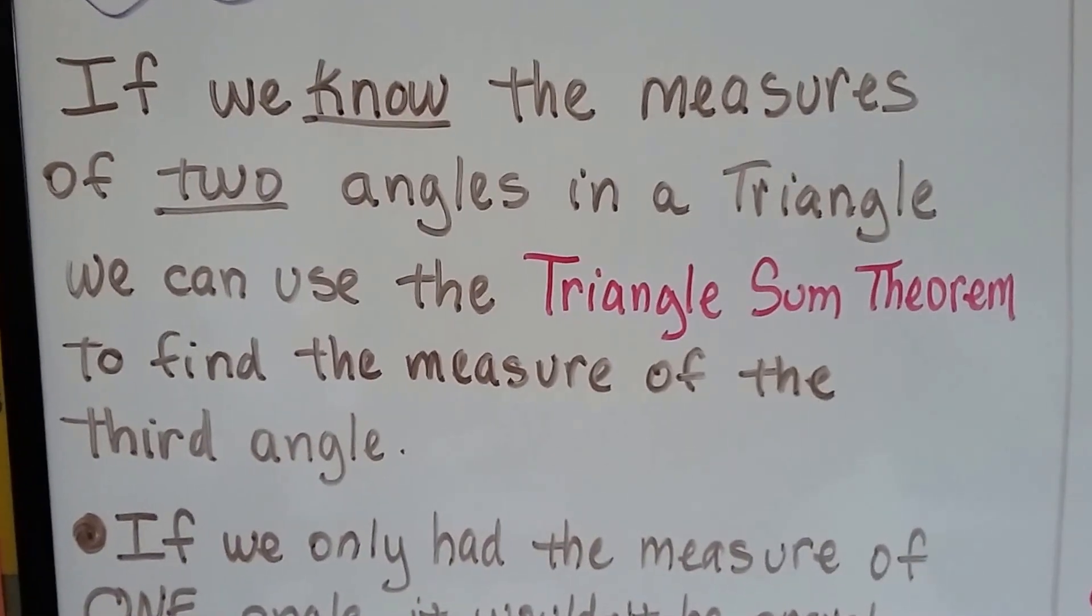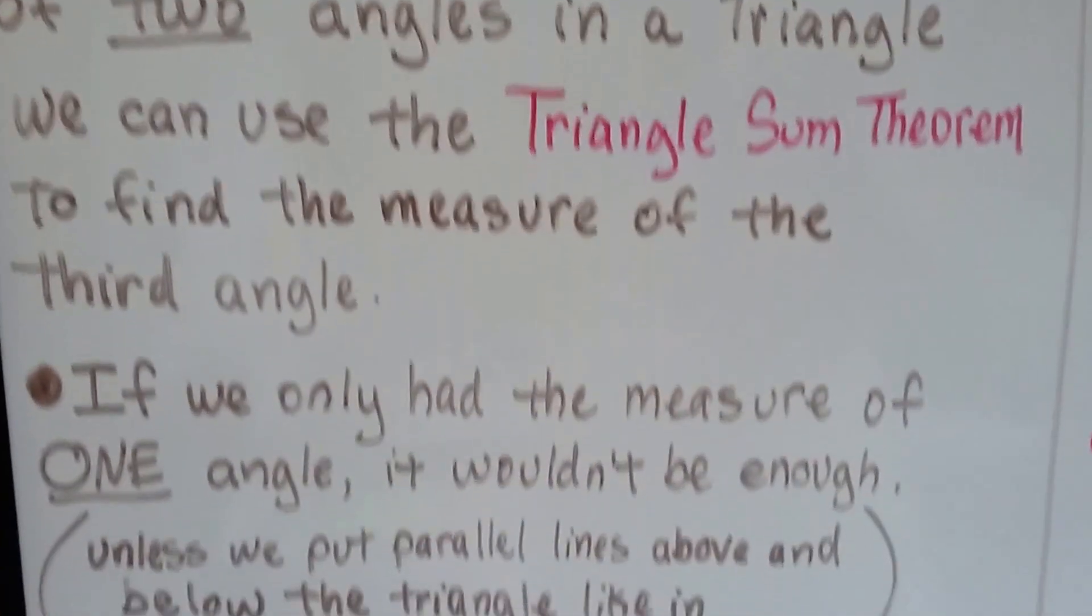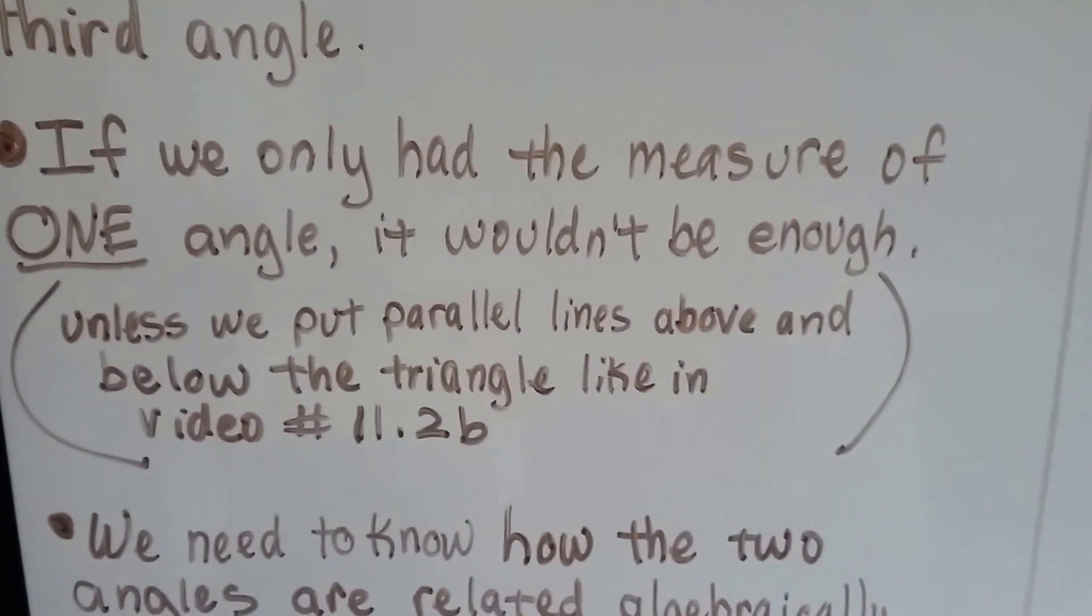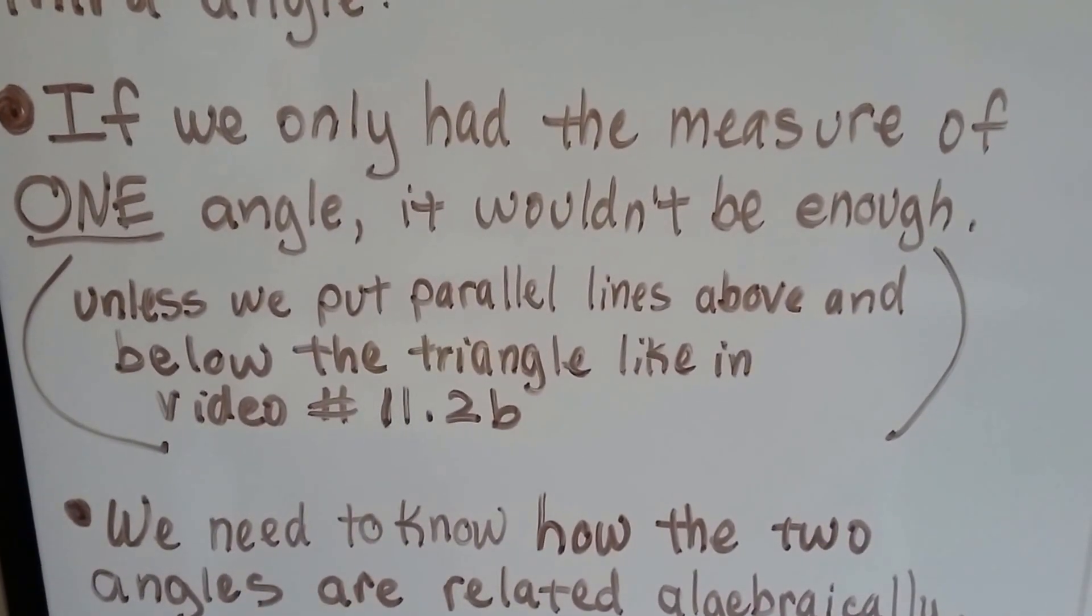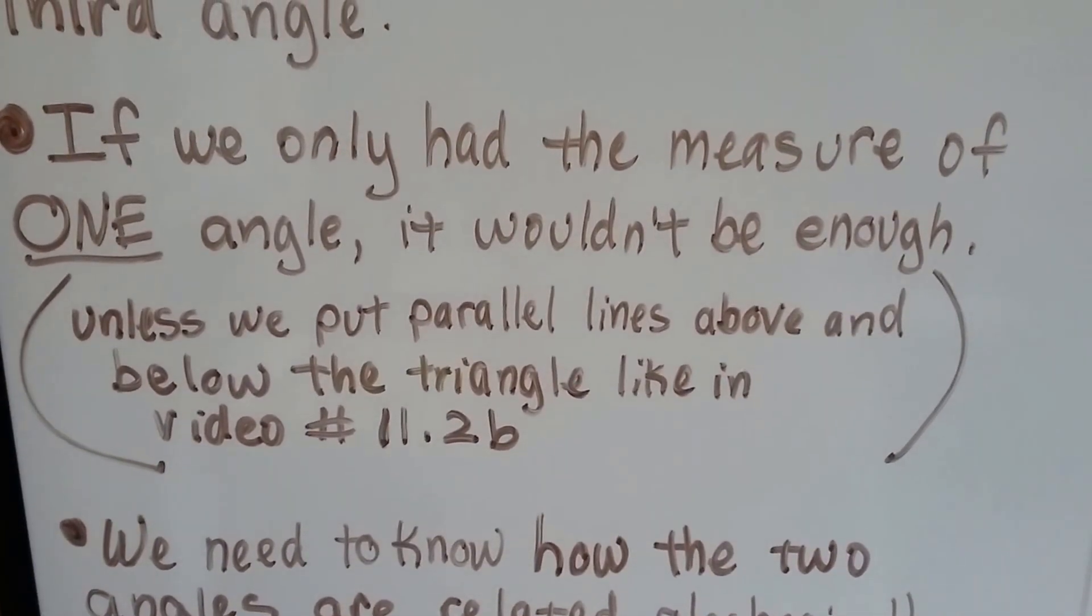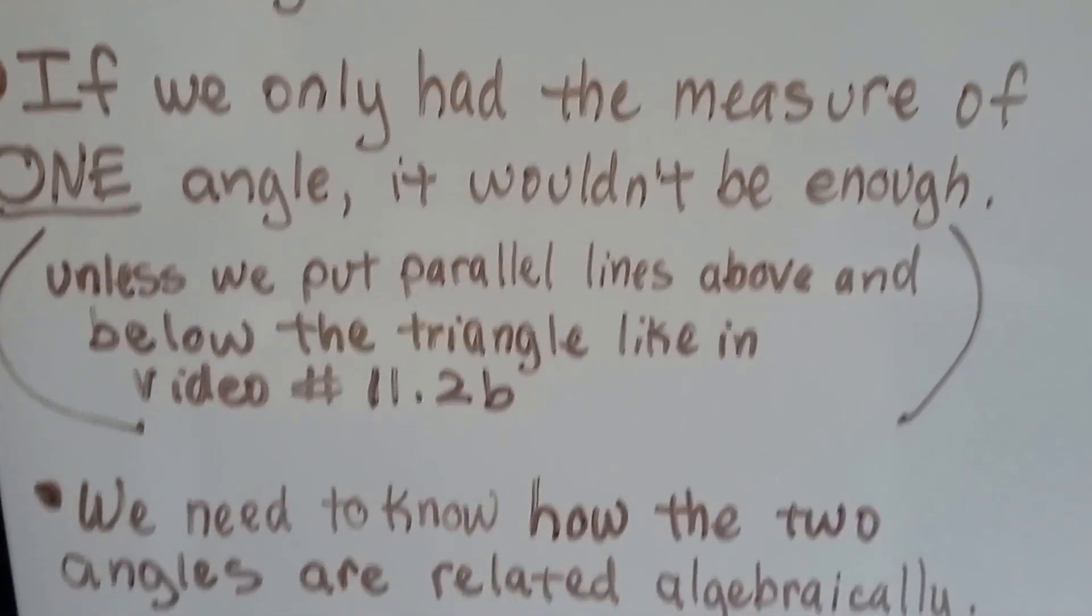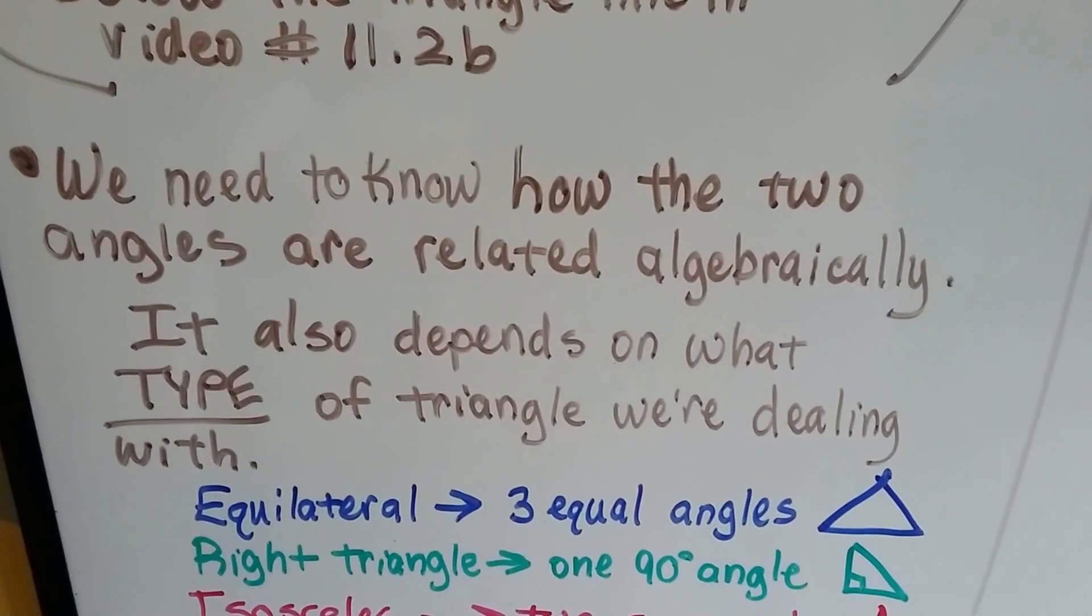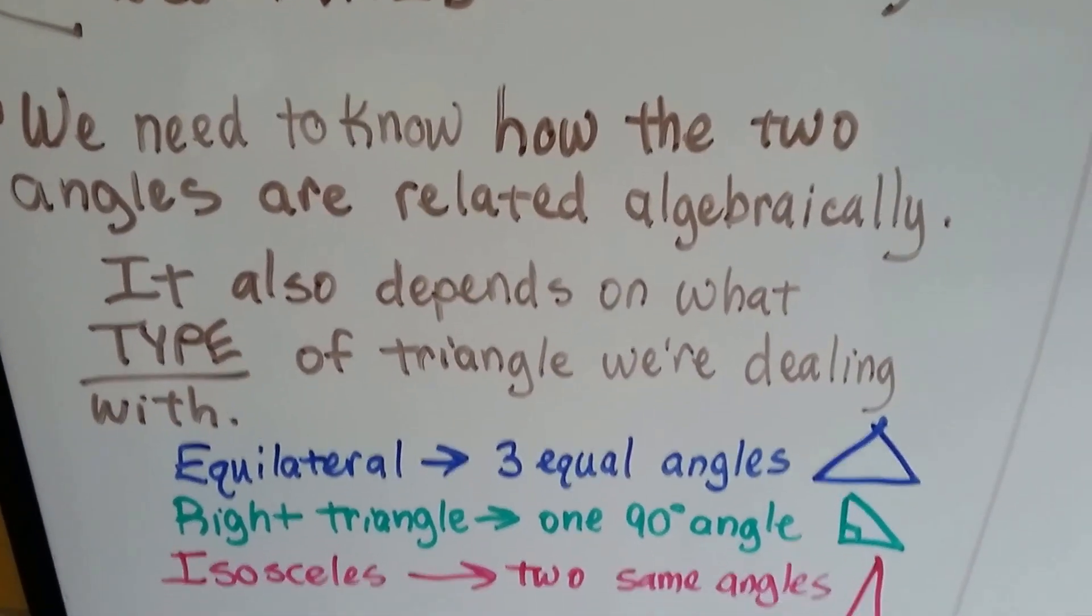We've talked about the Triangle Sum Theorem in the last few videos. If we only had the measure of one angle, it wouldn't be enough unless we put parallel lines above and below the triangle, like in video 11.2b. We need to know how the two angles are related algebraically.